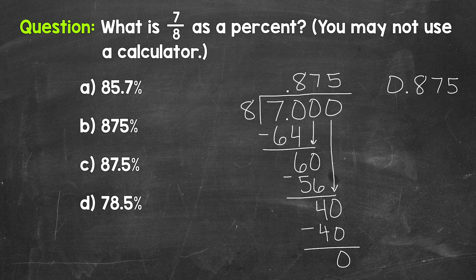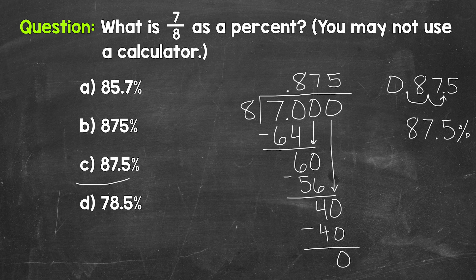So let's rewrite our decimal off to the side here and move the decimal once, twice to the right. This gives us 87.5 percent. Our answer is C. So there you have it. There's 7/8 as a percent.